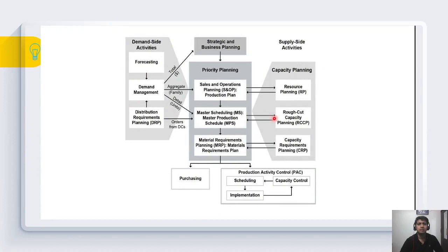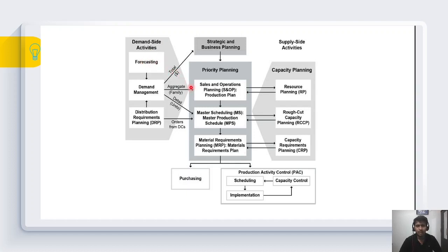I have a diagram taken from the APICS dictionary which talks about the positioning of different supply chain functions end-to-end and where they are situated and how they influence the full plan. On a higher level, the starting point is demand management, shown as the first block, which gets inputs from forecasting.